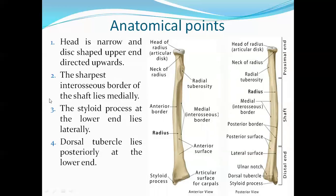To summarize the anatomical features: the head is narrow and disc-shaped, directed upwards. There is a sharp interosseous border lying medially. The lower end bears the styloid process laterally, directed downwards. The posterior surface of the lower end bears the dorsal tubercle.